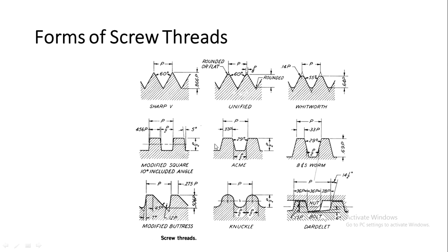There are different forms of screw threads based upon the shape of the threads. We have the sharp type, the unified, and the Whitworth — in Whitworth there is no sharp edge, it has a smoothened-out edge. Then we have the square type. We have acme, which has a trapezoidal kind of thread, and then we have modified buttress. We have the British worm type, the dardelet, and the knuckle — in the knuckle type the edges are more smooth and hemispherical.